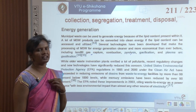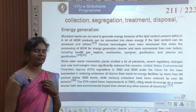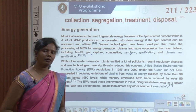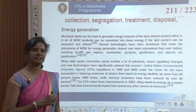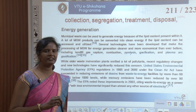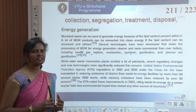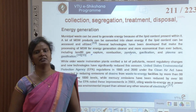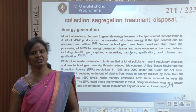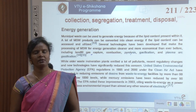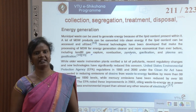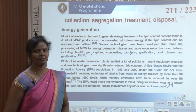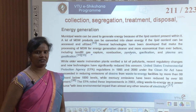Combustion and plasma arc gasification can also be done. While older waste incineration plants emitted many pollutants, recent regulatory changes and new technologies have significantly reduced concerns. US EPA regulations in 1995 and 2000 under the Clean Air Act reduced dioxin emissions from waste-to-energy facilities by more than 99% below 1990 levels, while mercury emissions were reduced by over 90%.